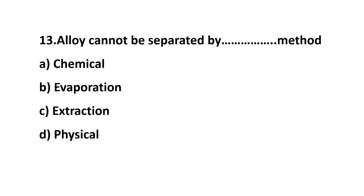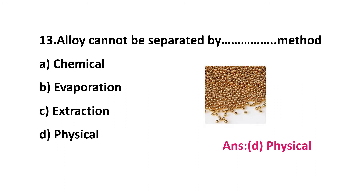Question 13: alloy cannot be separated by __ method — option A: chemical method, option B: evaporation method, option C: extraction method, option D: physical method. Alloy is a chemical substance — a combination of metal and metal or metal and non-metal. So surely it cannot be separated by physical method. The answer is option D: physical method.